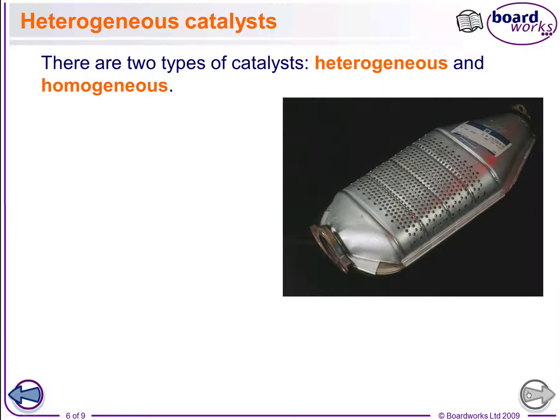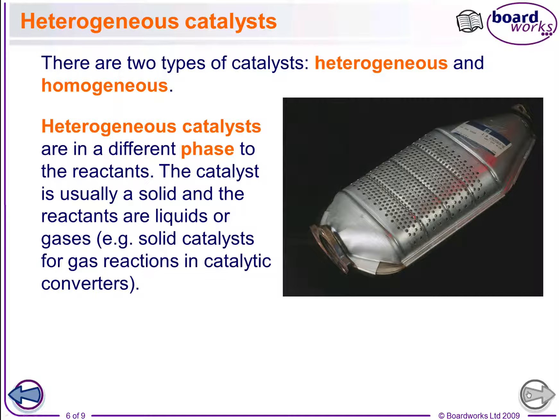The last thing to look at is the idea of heterogeneous and homogeneous catalysts — very commonly used phrases. A heterogeneous catalyst is one that's in a different phase to the reactants. Generally the catalyst would be a solid, like in the car exhaust: platinum, palladium, or rhodium. It's coated on a honeycomb in order to save cost and to increase surface area.